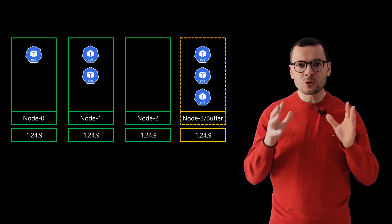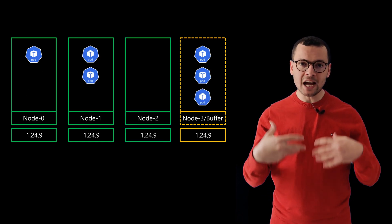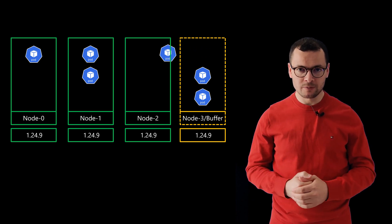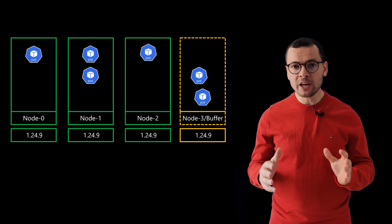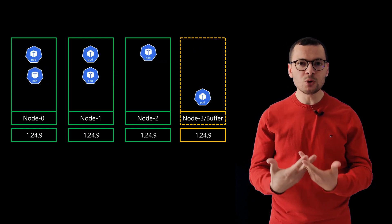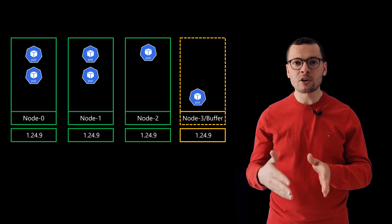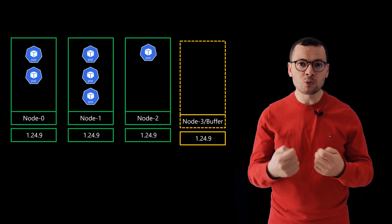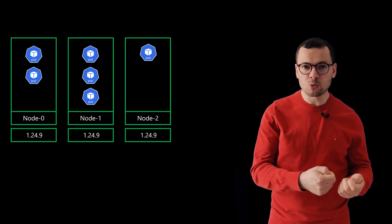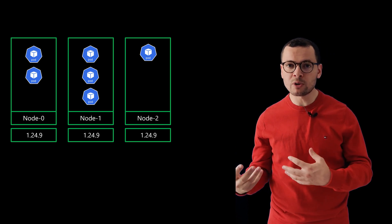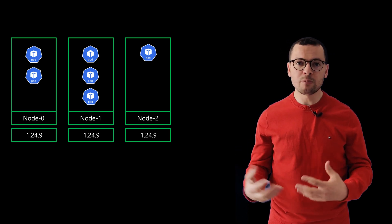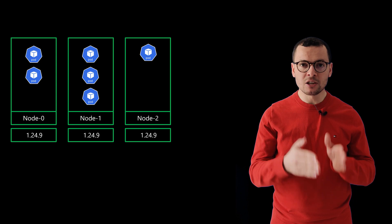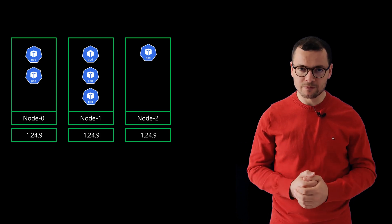The node image upgrade will perform a rolling upgrade for the nodes one by one. That is the same process used with the Kubernetes or AKS version upgrade. If moving from version 1.23 to version 1.24, behind the scenes the same rolling upgrade mechanism will be run.